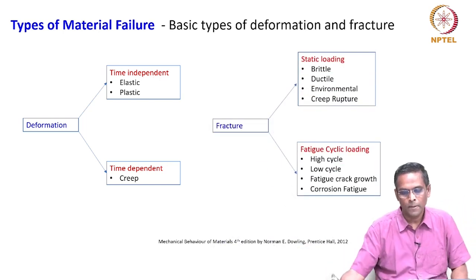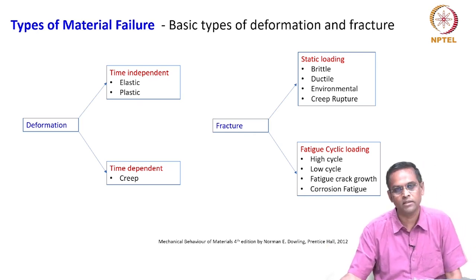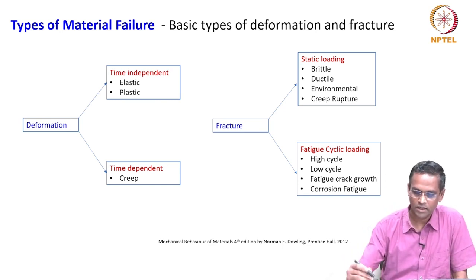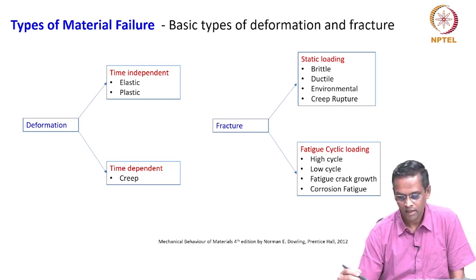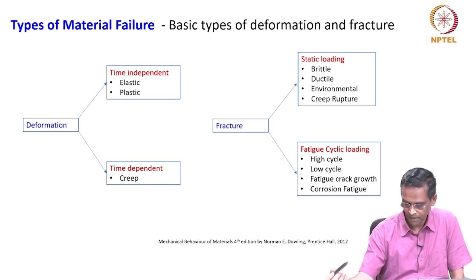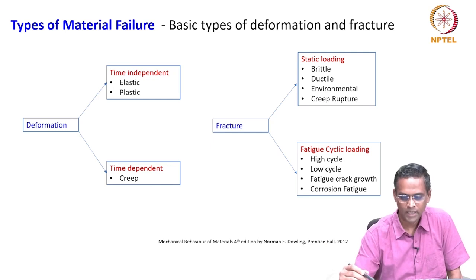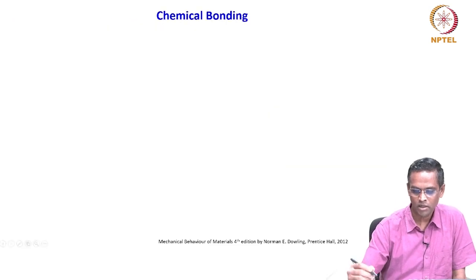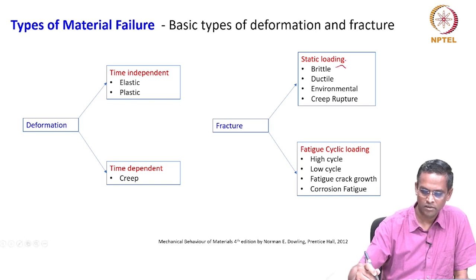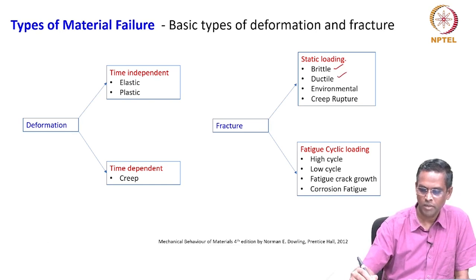If you take fracture, you can look at it in two broad categories: whether fracture occurs under static loading or fracture occurs under cyclic loading. Under static loading, the fracture or failure can be brittle in nature, ductile in nature, environmental, or creep fracture.